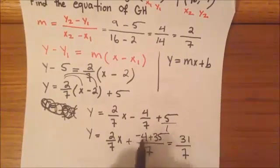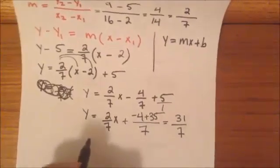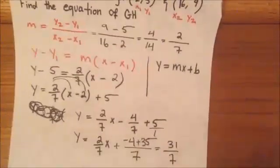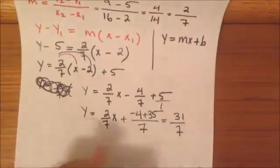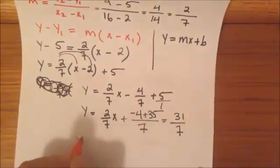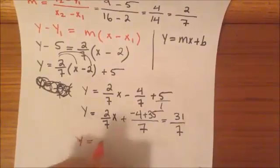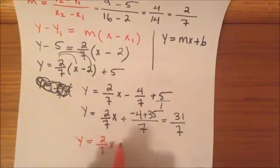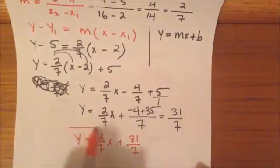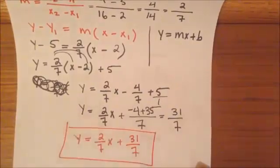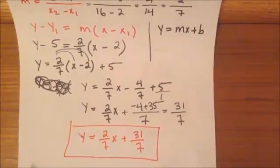So, now we're going to get our final answer to be, let me write it in a different color. So, we're going to get y equals 2 over 7 x, then it's going to be positive 31, so it's going to be plus 31 over 7 as our final answer. So, there we go.